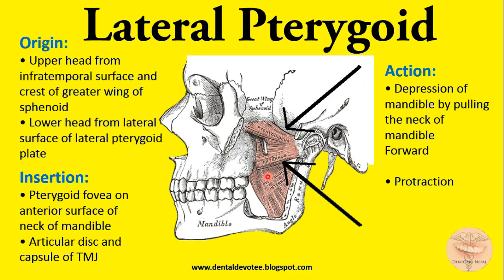Now let's move on to the lateral pterygoid. The lateral pterygoid has two heads: upper head and lower head. The origin of the upper head is from the infratemporal surface of the greater wing of sphenoid. It is inserted into the pterygoid fovea on the anterior surface of the neck of the mandible and also on the articular disc and capsule of the TMJ.